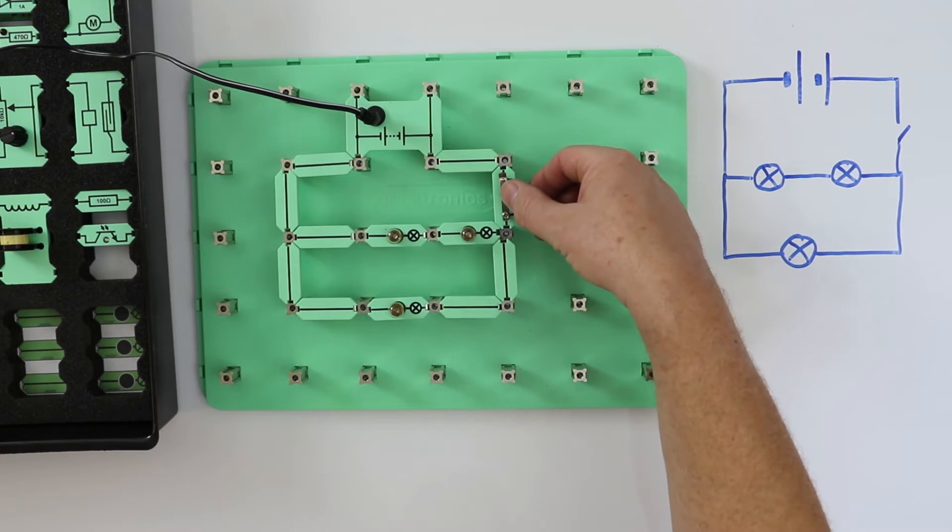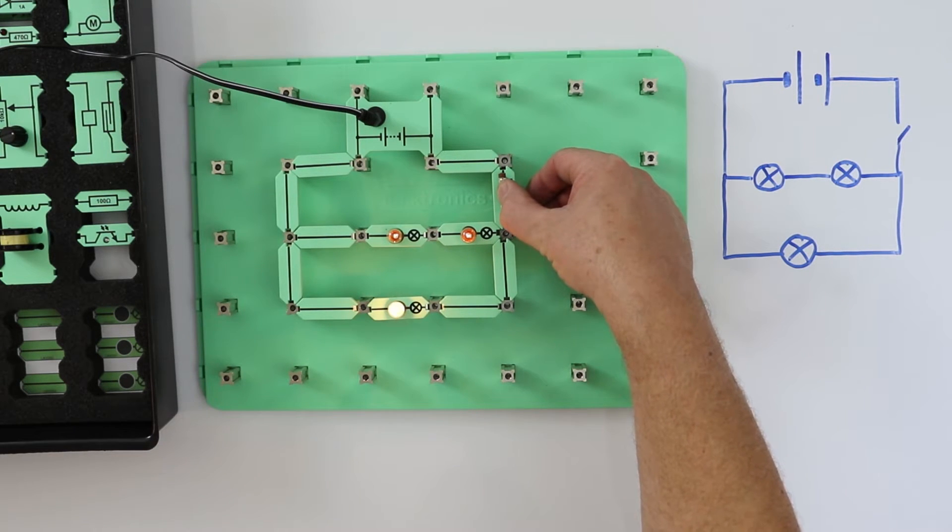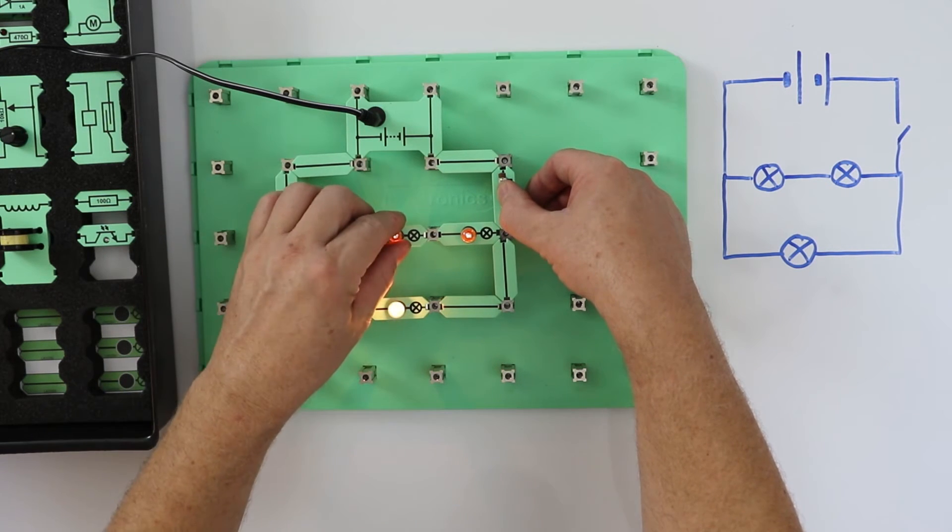Let's look at the brightness of the bulbs. What does this tell us? If we unscrew one bulb, we can also see what happens.